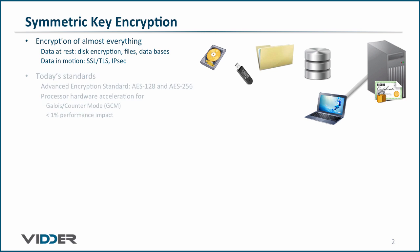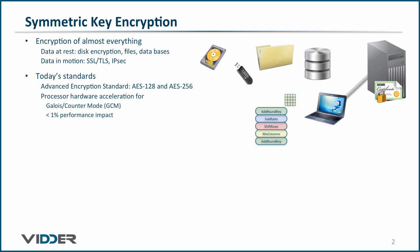Today, just about everyone uses the Advanced Encryption Standard algorithms for bulk encryption — that is, they use either AES-128 or AES-256. In fact, many processors have hardware acceleration for AES encryption using a method called Galois Counter Mode, or GCM. In a later video we will examine this mode in detail. With AES-GCM encryption, your laptop computer will experience less than 1% performance impact when sending and receiving data.